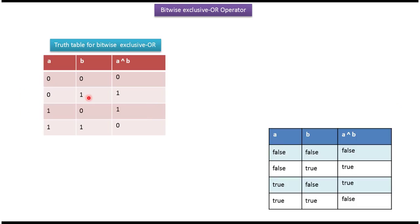Here you can see the truth table for bitwise exclusive OR. 0 exclusive OR 0 is 0, 0 exclusive OR 1 is 1, 1 exclusive OR 0 is 1, 1 exclusive OR 1 is 0. False exclusive OR false is false, false exclusive OR true is true, true exclusive OR false is true, true exclusive OR true is false. We will see one example now.